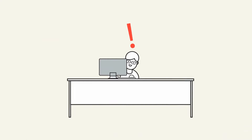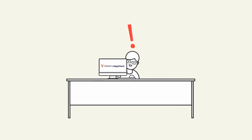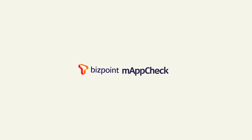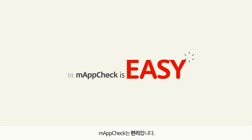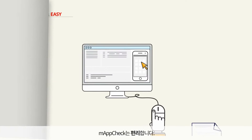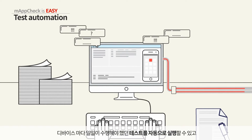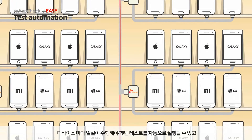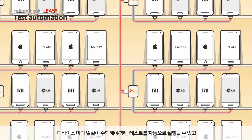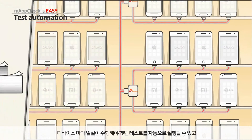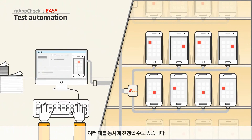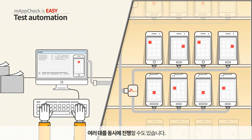T-BizPoint Mobile Application Check — M-AppCheck. M-AppCheck is easy. Troublesome manual tests can be done automatically, and several devices can be tested at the same time.